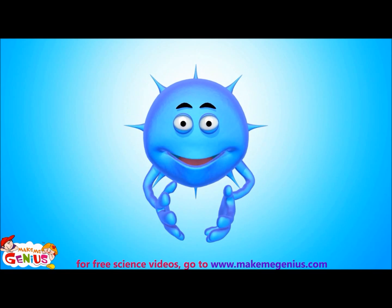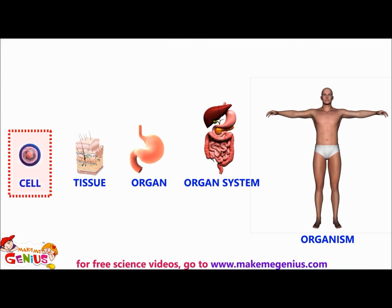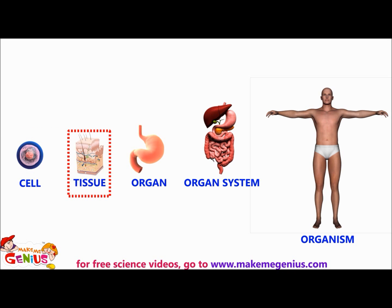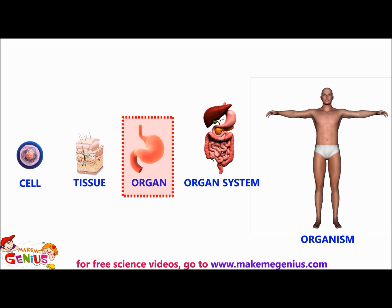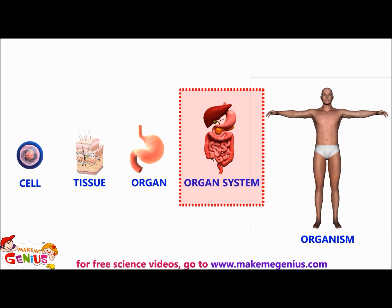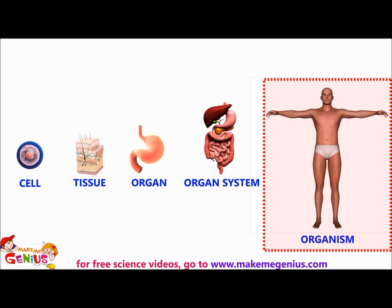So you want to know how we form a body? Many of us join together to form a tissue. Then tissues join together to make an organ. After that, organs join together to form an organ system. And all organ systems combine together to form a body.